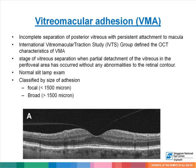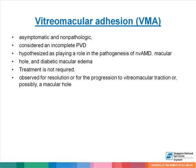Vitromacular adhesion is when there is incomplete separation of the posterior vitreous with persistent attachment to the macula. The IVATS group defined the OCT characteristics of VMA — there is partial detachment of the vitreous in the perifoveal area without any abnormalities to the retinal contour. These eyes appear normal on slit-lamp examination. VMA can be classified by size: focal when there is less than 1,500 microns of attachment, or broad if more than 1,500 microns.